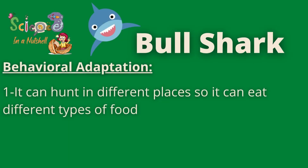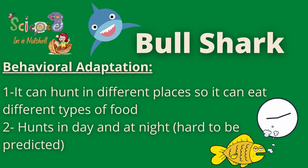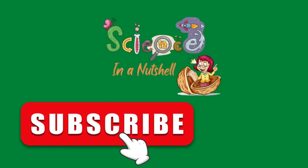Now let's talk about the behavioral adaptation of the bull shark. The bull shark can hunt in different places, like salt water or fresh water, so it can feed on different types of food. The bull shark can hunt during the day as well as the night, so its prey cannot predict when the shark is going to be hunting next. Also importantly, in fresh water, bull sharks have less competition for finding food because there are no other sharks in fresh water to share their food.